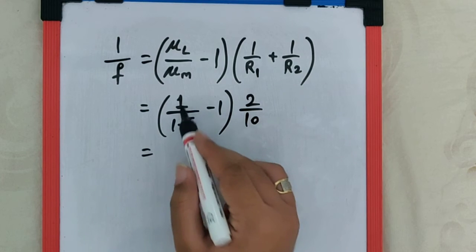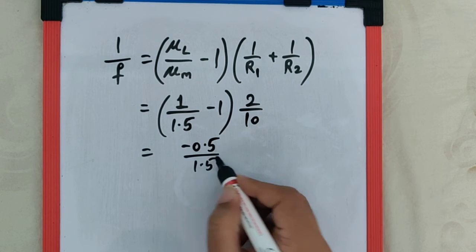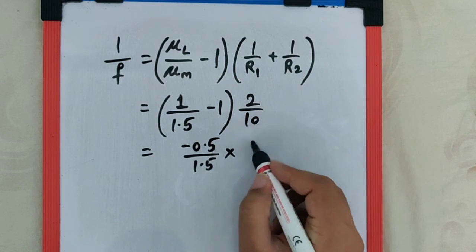This becomes (1 - 1.5), which is -0.5 divided by 1.5, multiplied by 2/10, which equals 1/5.